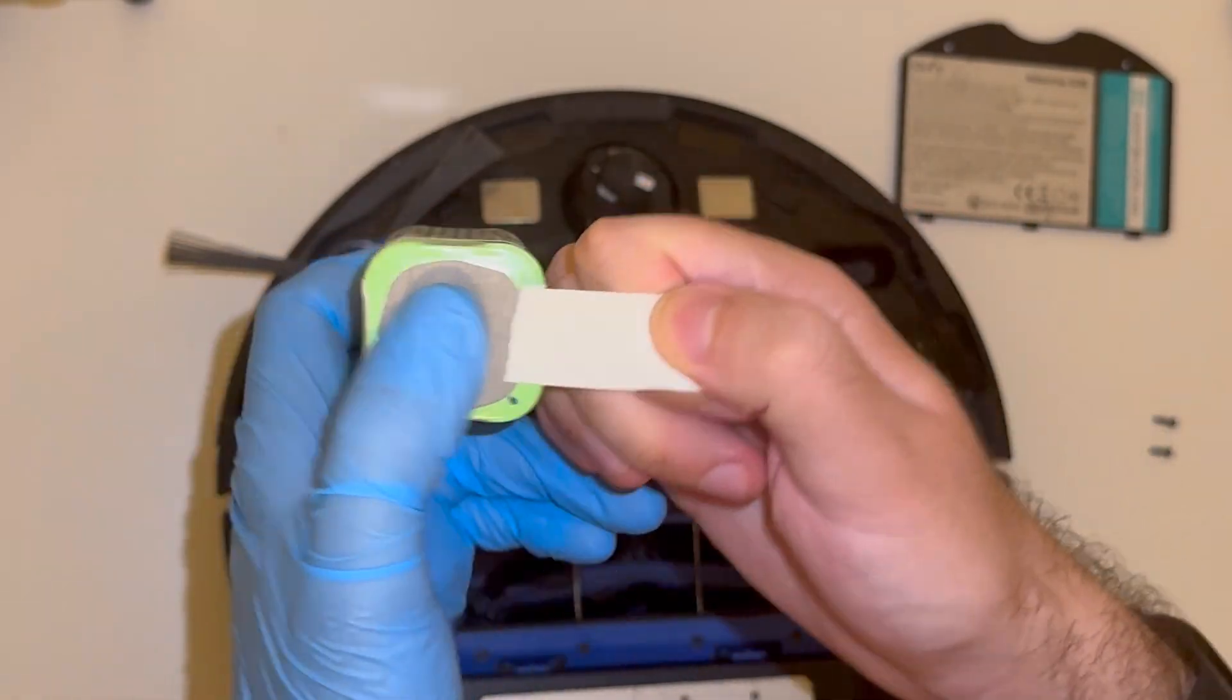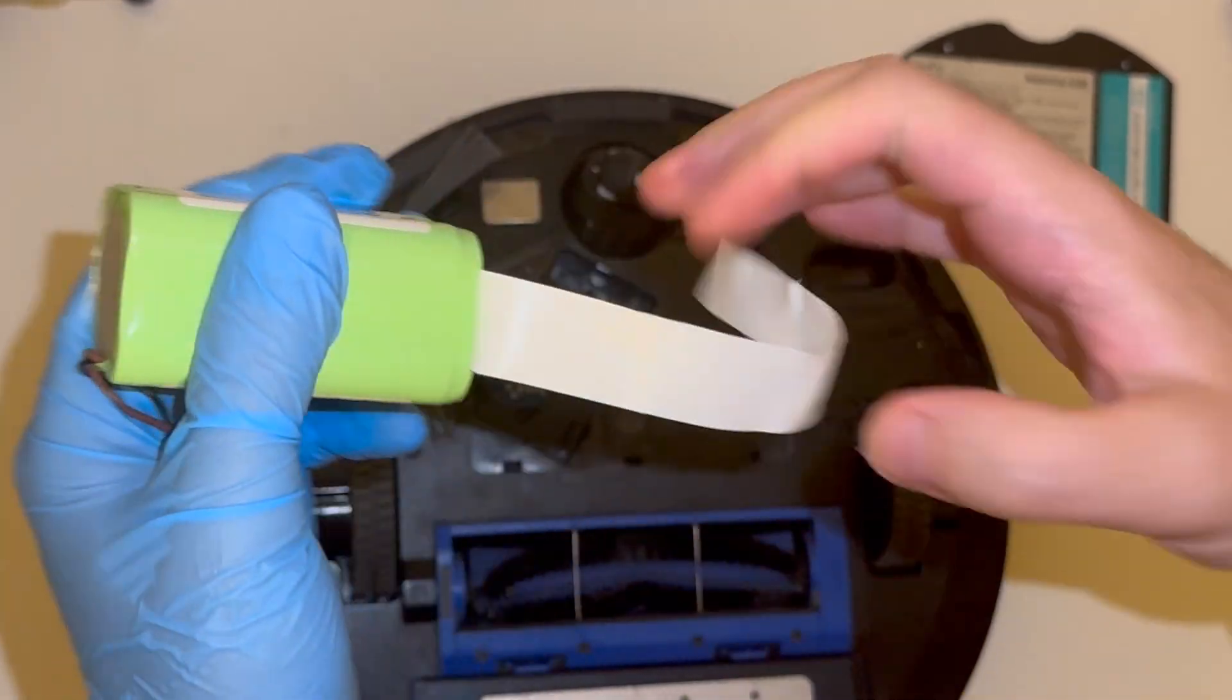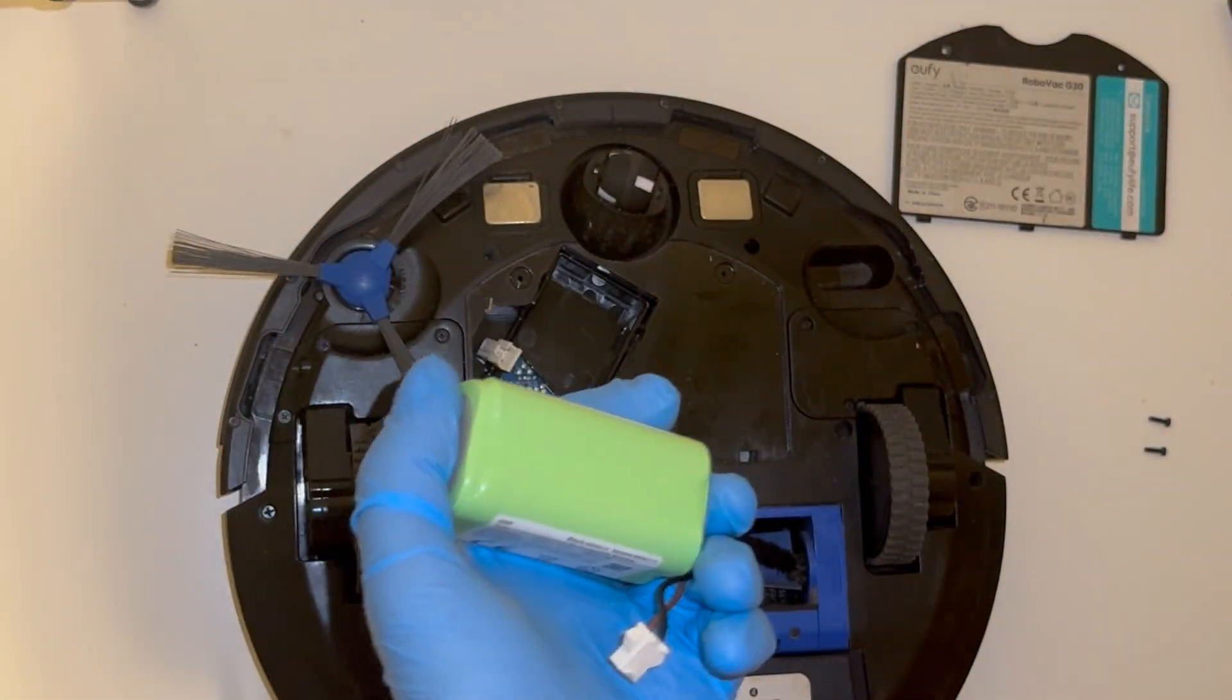So this white tape that was wrapped around the battery is just to provide us with that pull tab to help remove the battery, just to discourage us from using something metal and sharp like a knife to help us with removing the battery.